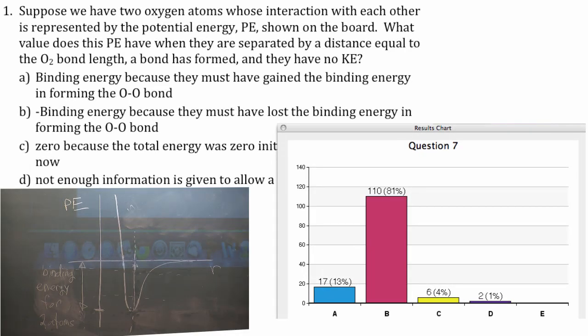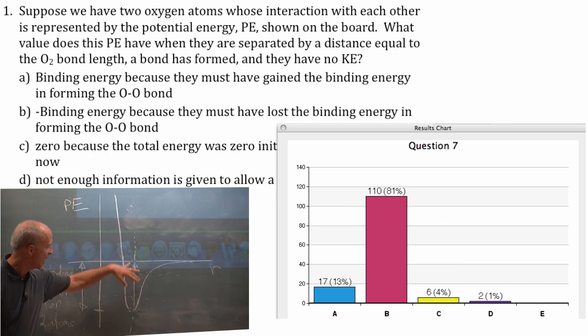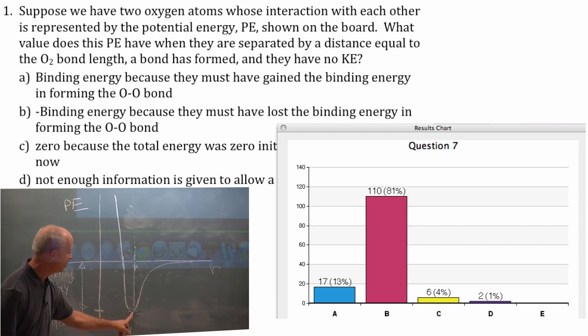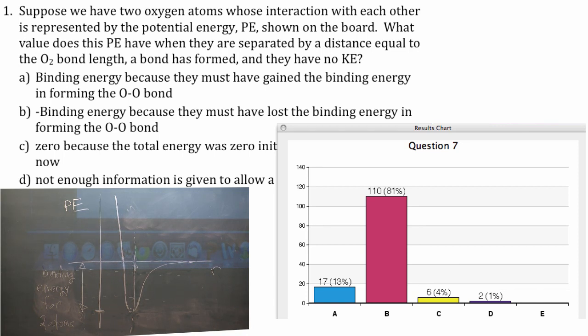So the dominant answer is the negative of the binding energy because they must have lost this binding energy. And the binding energy is the well depth. The potential energy is certainly negative of that value when they're at this location and they're bound into a molecule.